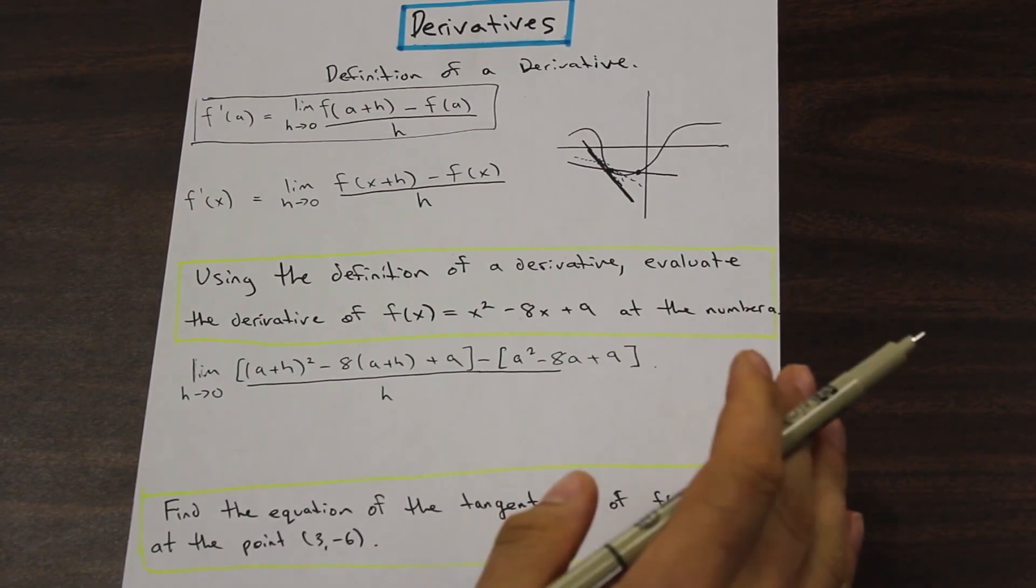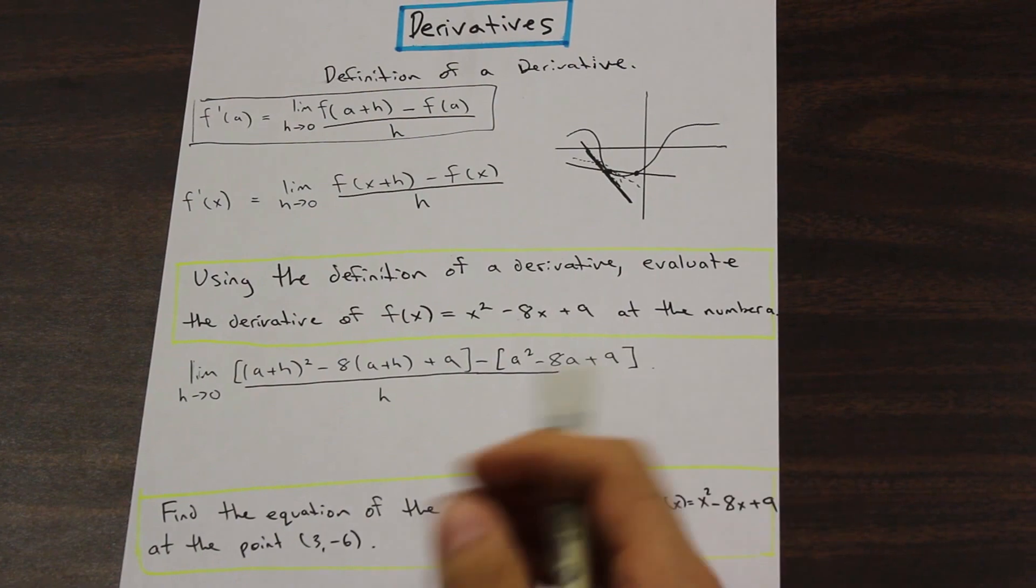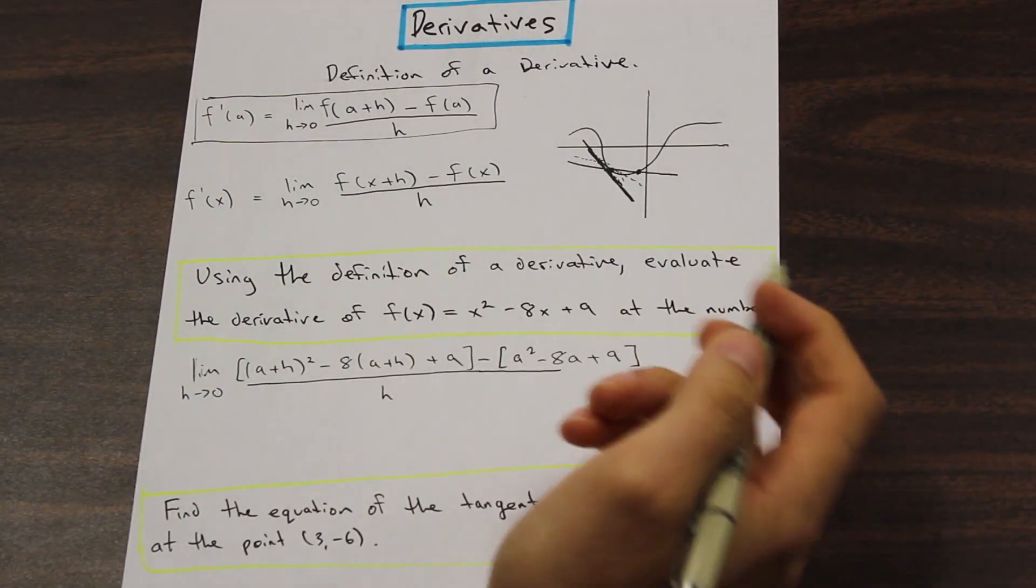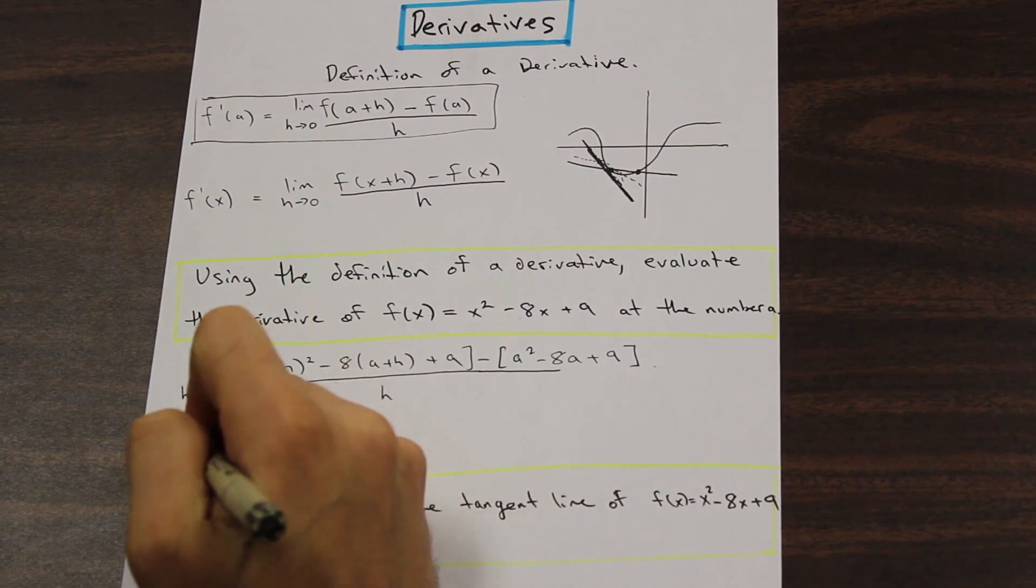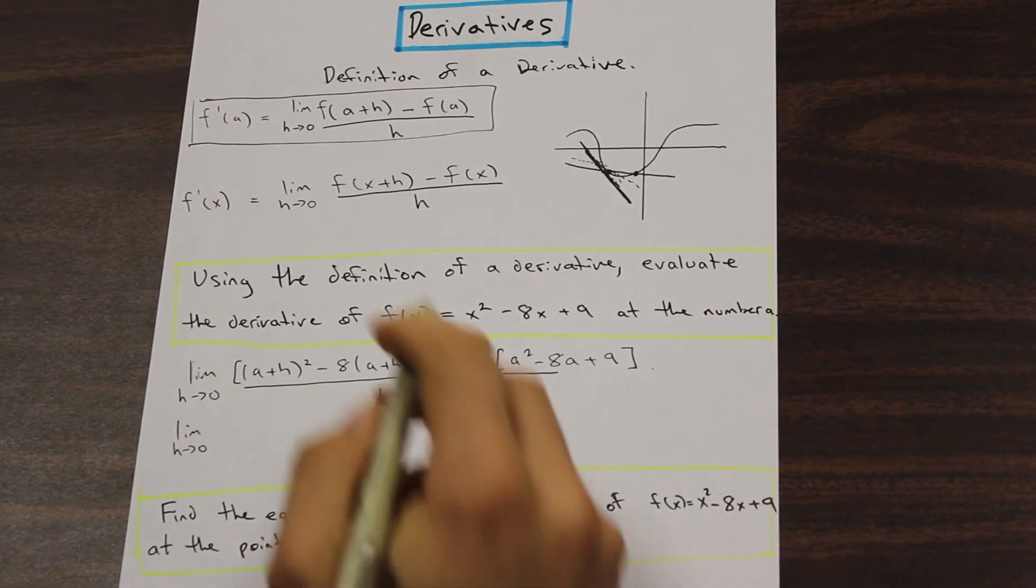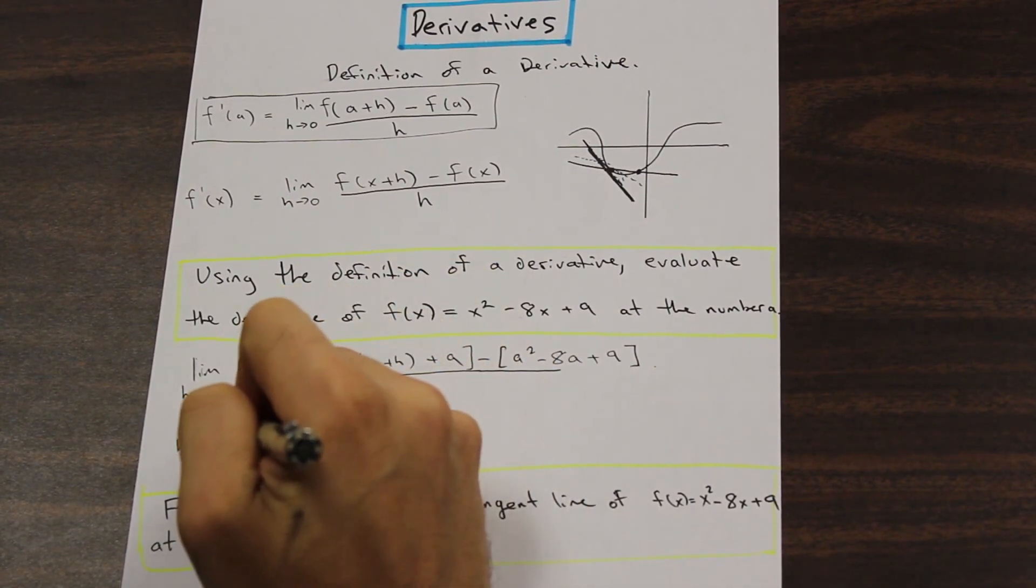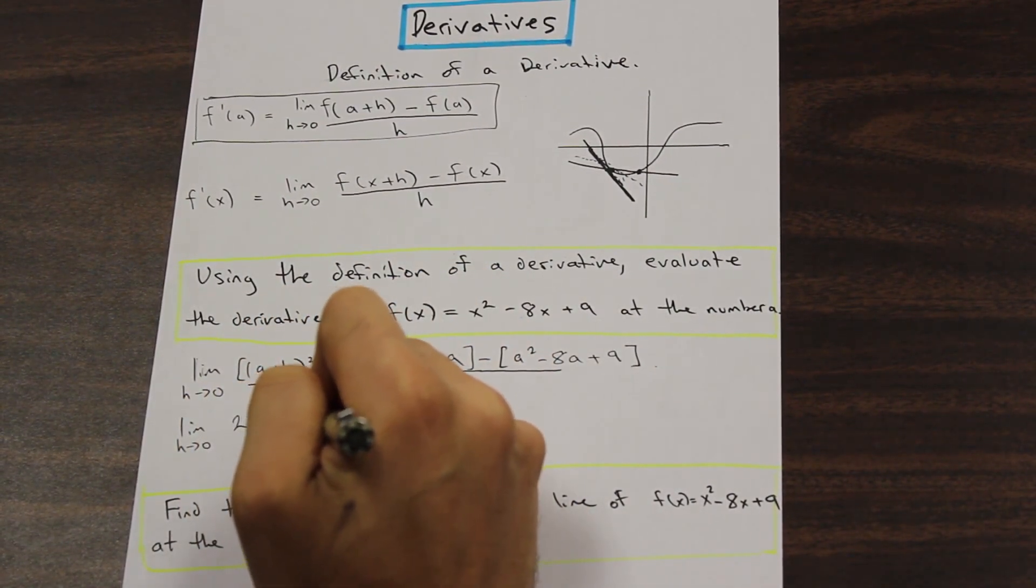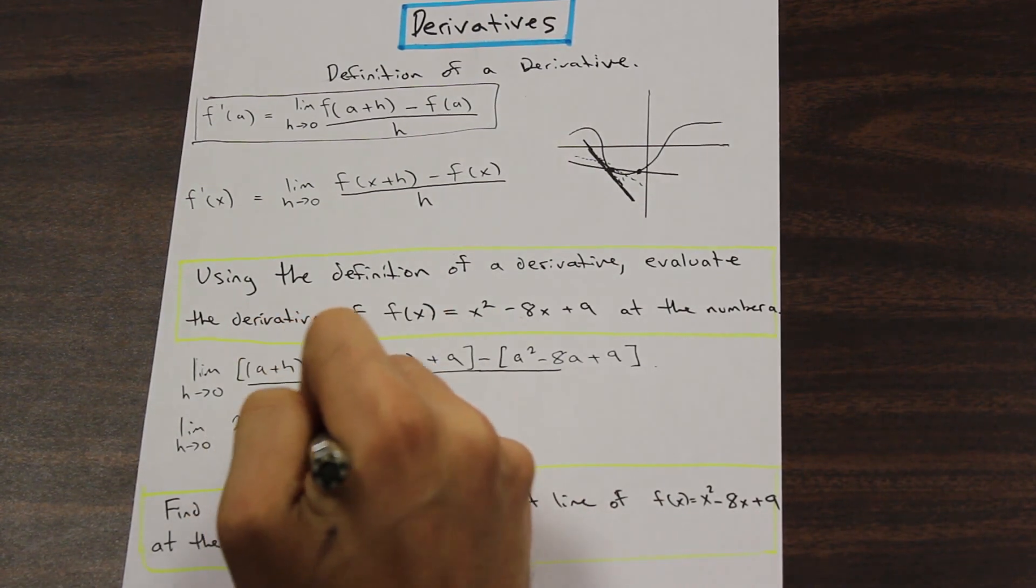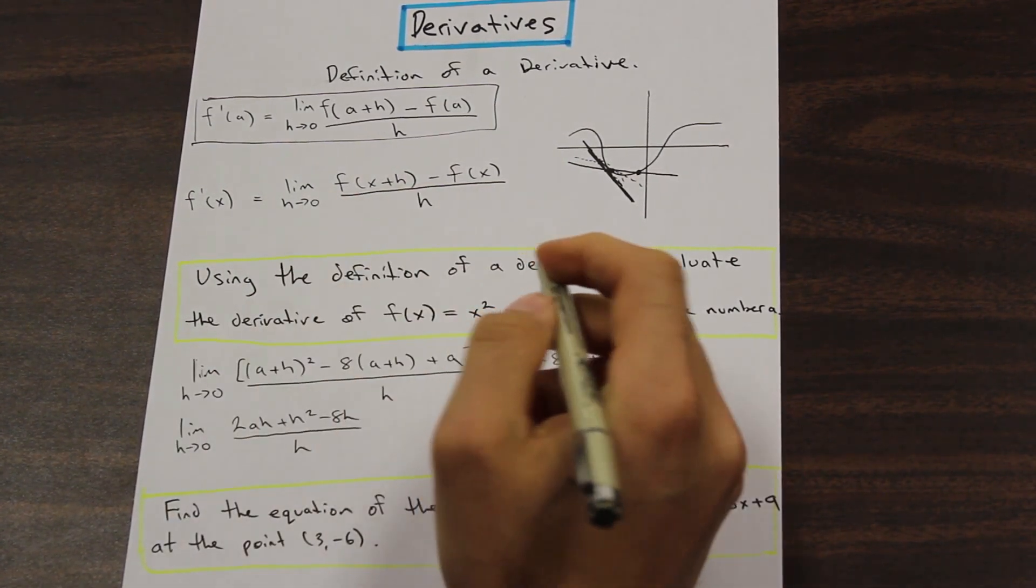And once those terms cancel, then you'll be able to start to solve for what we're looking for, which is the slope. So I am going to just skip ahead a couple steps and we end up with, after simplifying, 2ah + h² - 8h over h.